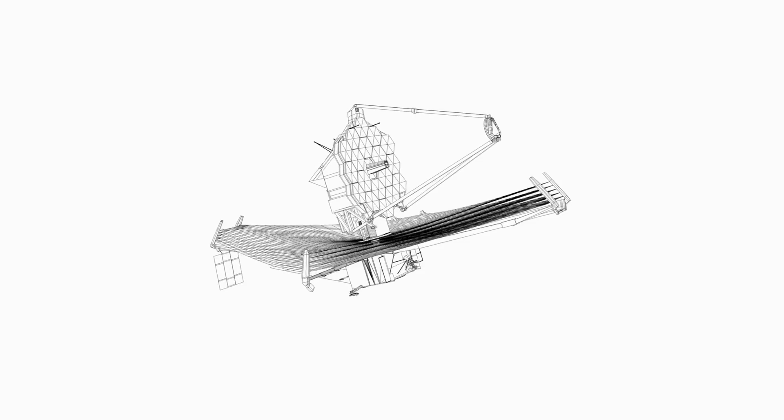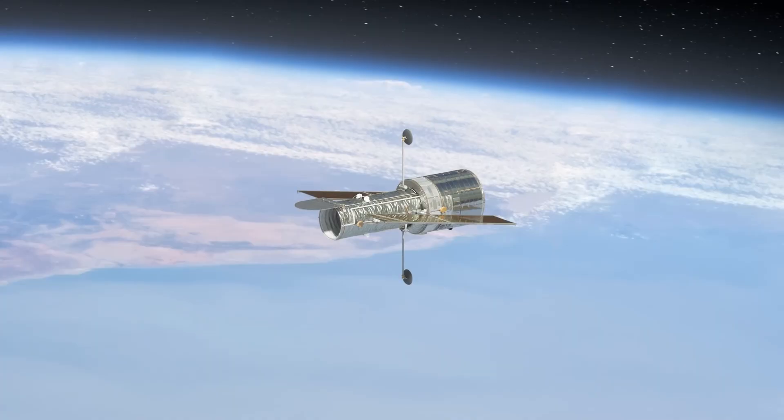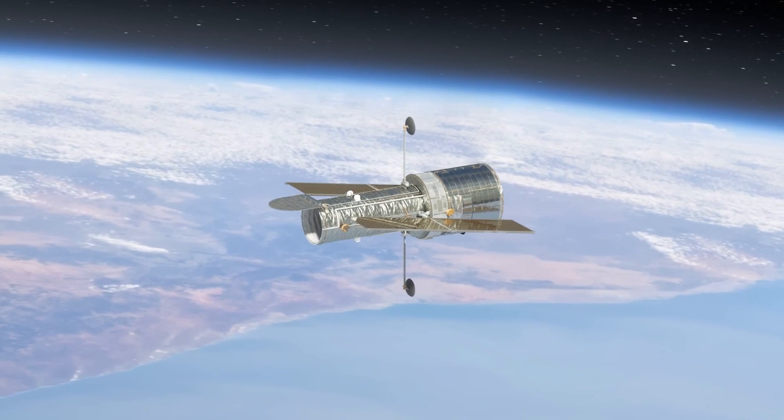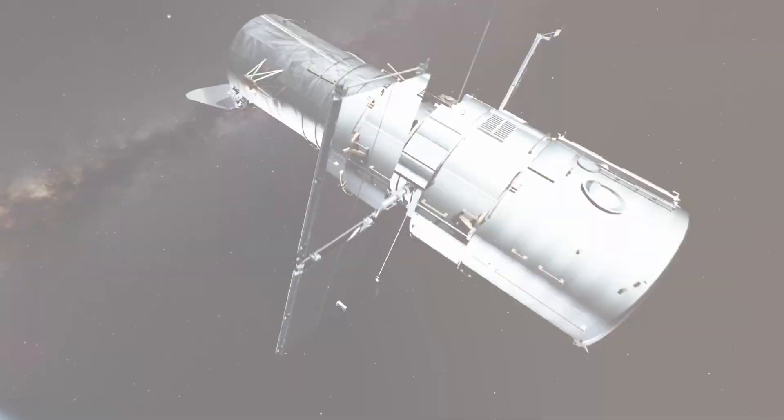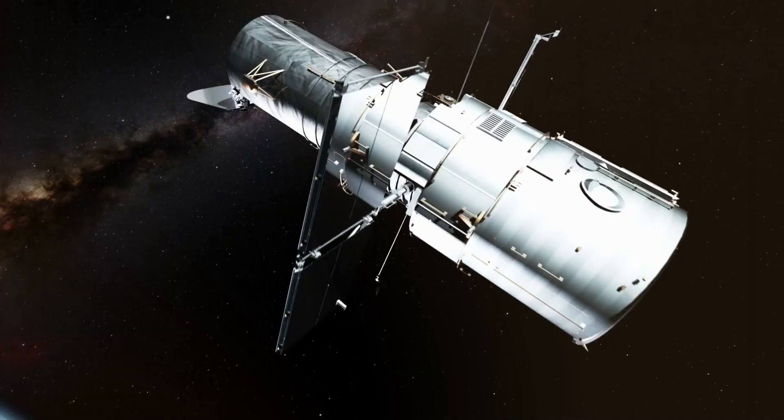The James Webb Telescope is an overly powerful, incredibly advanced, and costly project of NASA. But that doesn't make the Hubble any less inferior to it. In fact, Hubble is the predecessor of the Webb. All the sophisticated features that the Webb has been endowed with are actually the results of improved features that had earlier been applied to the Hubble.